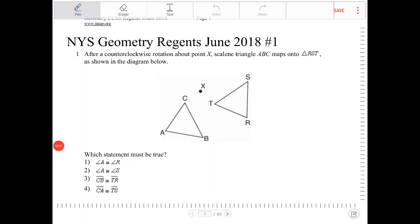After a counterclockwise rotation about point X, scalene triangle ABC maps onto triangle RST as shown in the diagram below. Which statement must be true?